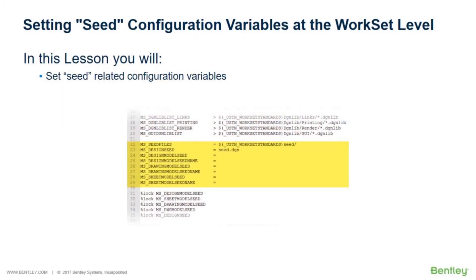Configuration variables are used to set the location of various seeds that are used in a dynamic views workflow. These variables are an important component in the overall setup of the dynamic views. There are variables available to define the location of seed files, seed models, and seed model names. In this section, you will set configuration variables that define the location of seed files and seed models in the workset configuration file.